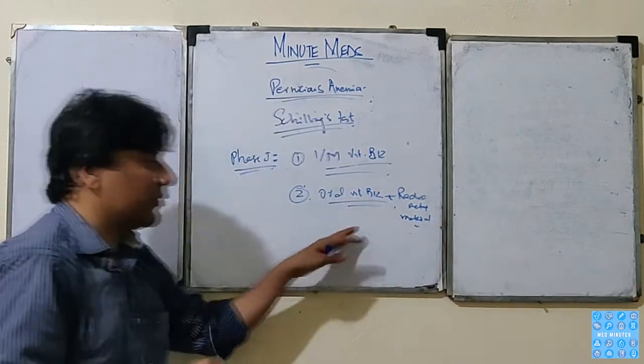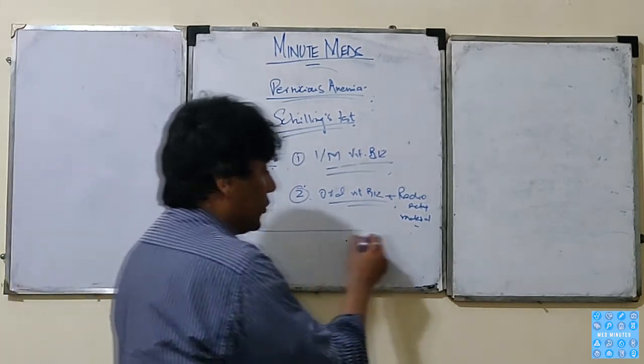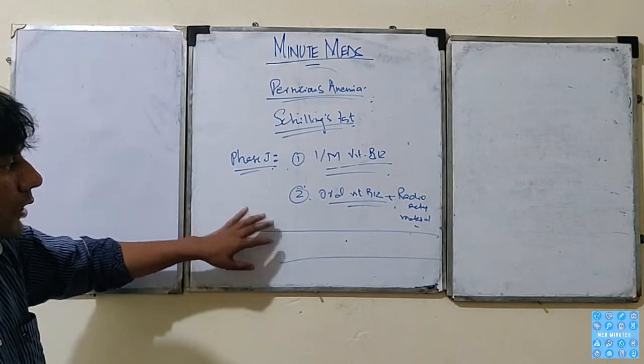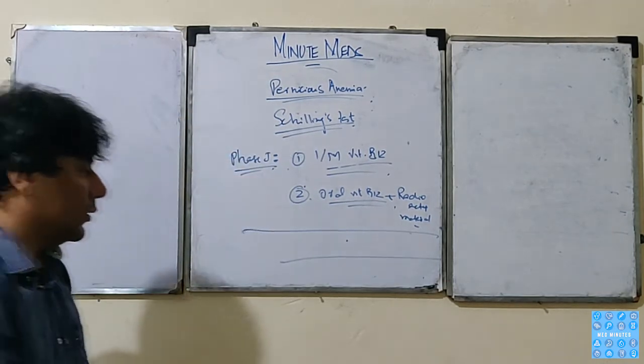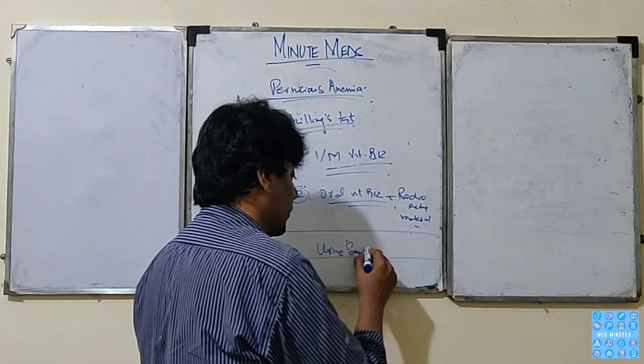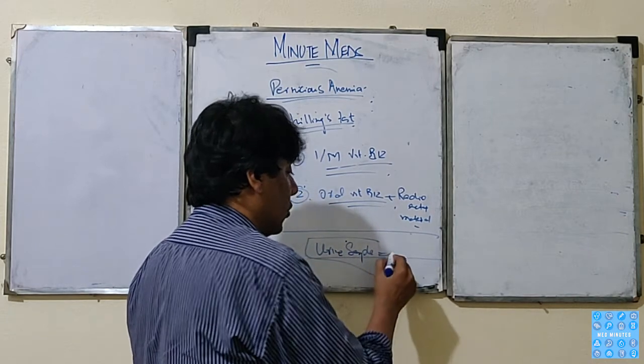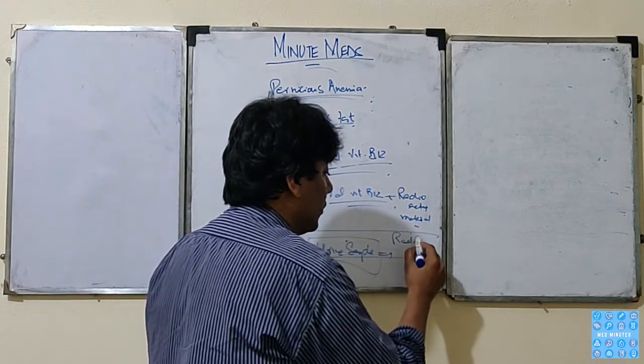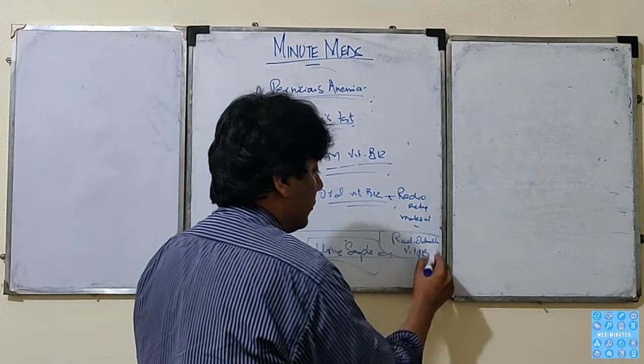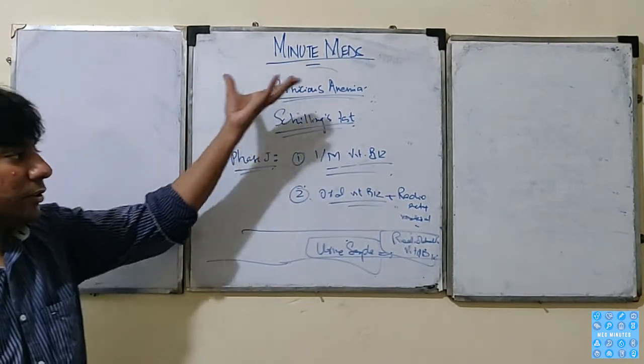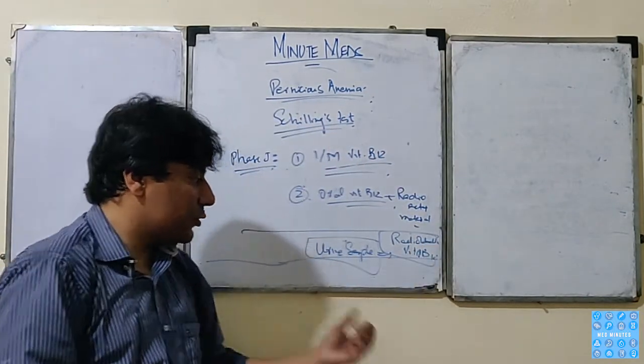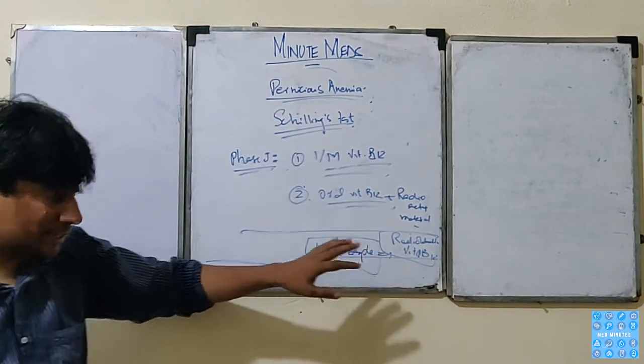We can trace it in the urine. So in a normal body where absorption is all right and intrinsic factor is present, vitamin B12 goes into the gut, gets absorbed, and excess is excreted in urine. We take a urine sample and look for radio-labeled vitamin B12. That is a normal test. If it comes normal, absorption is normal.